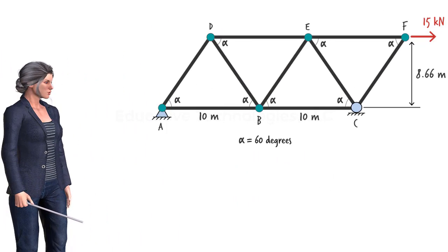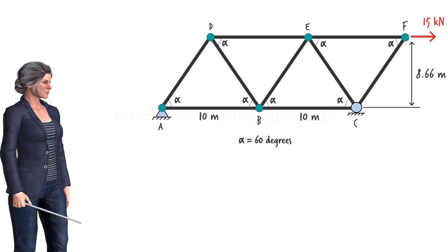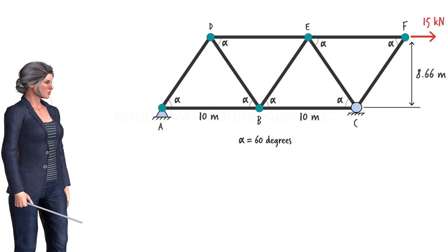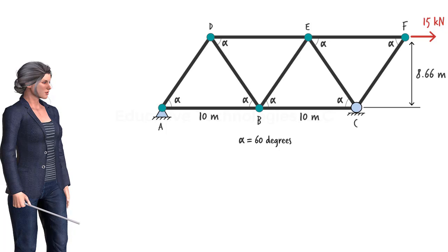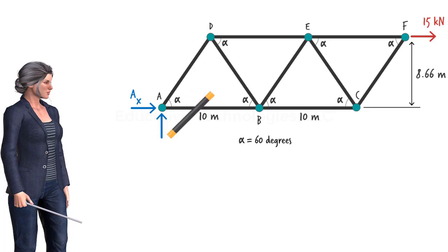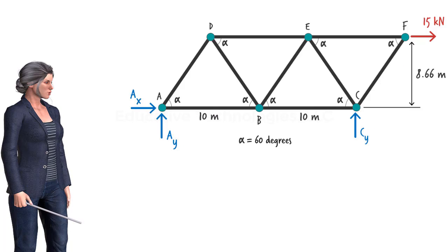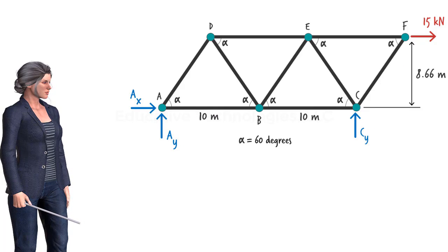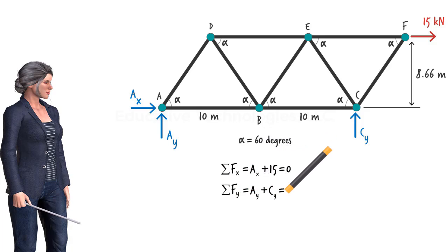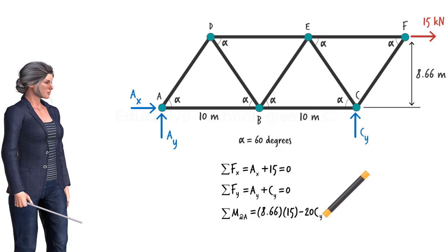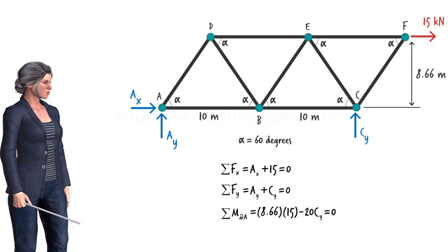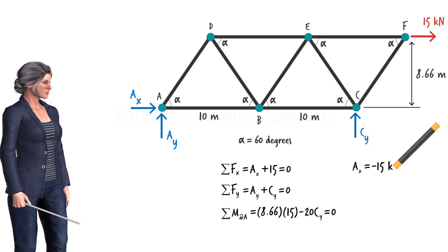Let's examine the method of joints in the context of this truss. To simplify the process of calculating the member forces, we can always start by determining the support reactions. This is done by applying the equilibrium equations to the entire truss. In this case, there are three unknown reaction forces. To determine them, we need to write the three static equilibrium equations. Solving these equations for the unknowns, we get...